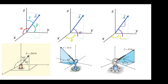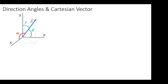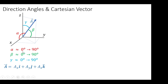These are the types of problems involving angles in finding Cartesian vectors. Let's focus on the values of directional angles and the Cartesian vector. Here, if a vector is positioned in positive x, positive y, and positive z, we expect alpha, beta, and gamma to each be between 0 and 90 degrees. The components ax, ay, and az are all positive.